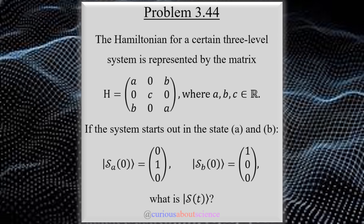What we want is for two parts: if the system starts out in state s-not, for part (a) the state is (0, 1, 0), and we want to find s of t — the time evolution. For s of (b) we have a different state, so we're going to have to first do some math to figure out what possible states these could be.